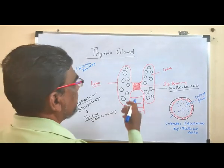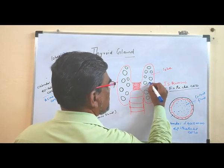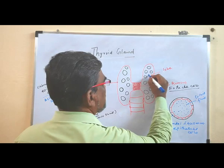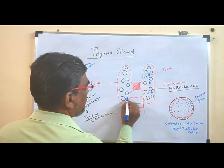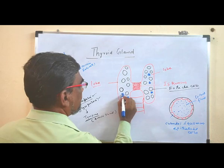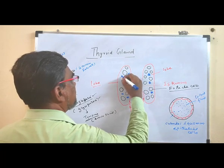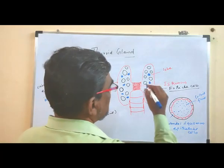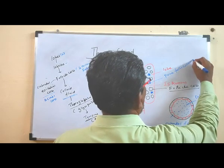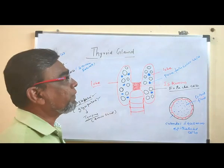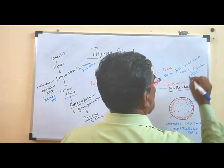Apart from follicle cells, outside the follicle cells, some special cells are also present. These cells are called parafollicular cells — also known as C cells.